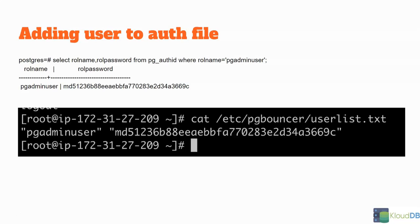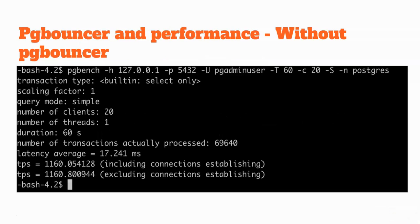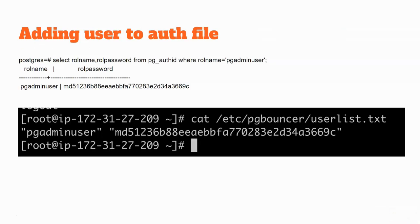If you have an application user, you can add that here along with the hash password. And if you have any admin users or stats users, you can add them here as well. Now we've covered all the important parameters, and I'm going to show you live on the system how to change these parameters and make PG Bouncer work.